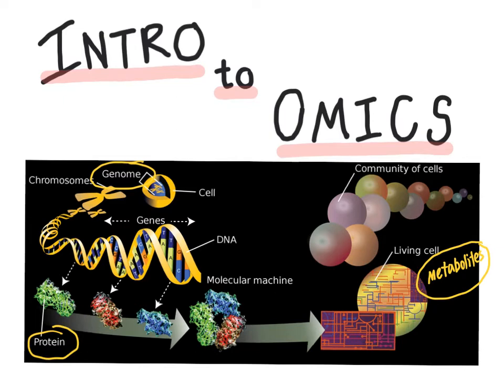The old-school way of looking at complex biological systems was to focus on one or a few genes, proteins, or molecules. But since biology is complex, that gave a very narrow view of how the cell or population of cells works overall. Due to that complexity, it's much more powerful to look at large scale at a variety of genes, proteins, and metabolites rather than focusing on just one or a few.